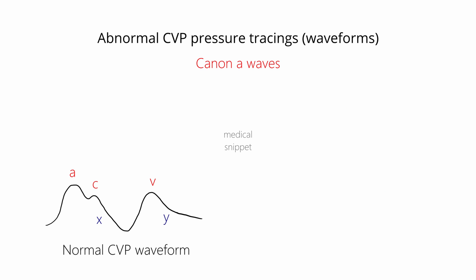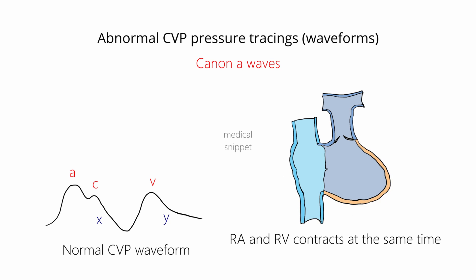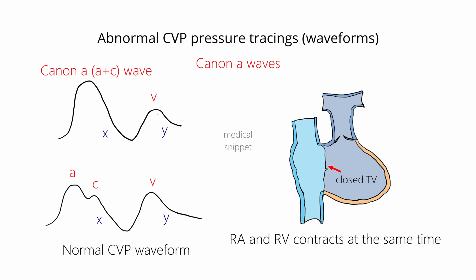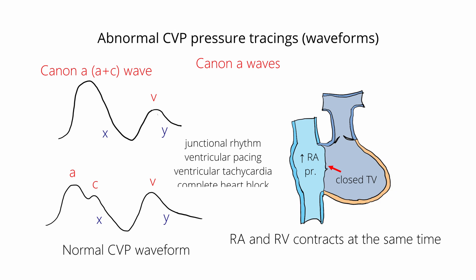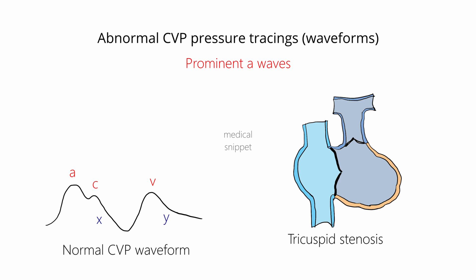Canon A waves occur when the atrium and ventricle contract at the same time, resulting in fusion of the A wave and C wave. The right ventricular contraction closes the tricuspid valve, so when the right atrium also contracts at the same time, it contracts against the closed tricuspid valve. This rapidly increases the right atrial pressure, causing canon A waves. Some causes of simultaneous atrial and ventricular contractions are junctional rhythm, ventricular pacing, ventricular tachycardia, and complete heart block.